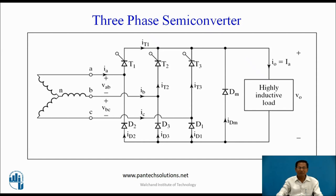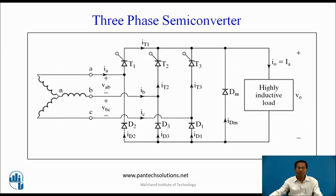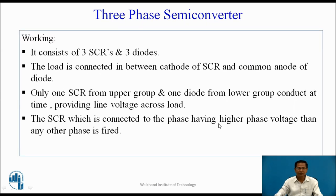This is the circuit diagram of the three-phase semi-converter. Load is highly inductive and DM is the freewheeling diode connected across the load. It consists of three SCRs and three diodes. The load is connected between the cathode of the SCR and the anode of the diode. Only one SCR from the upper group and one diode from the lower group conduct at a time, providing line voltage across the load.